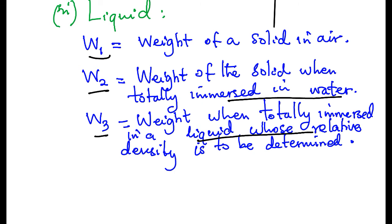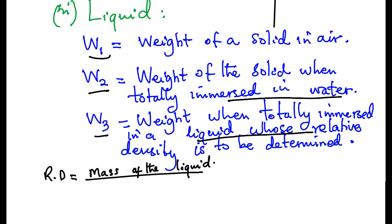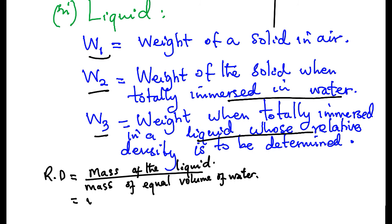From definition, relative density is equal to mass of the liquid divided by mass of equal volume of water. This is equal to weight of a liquid divided by weight of equal volume of water.